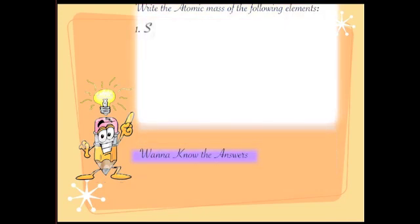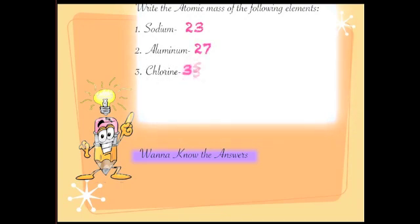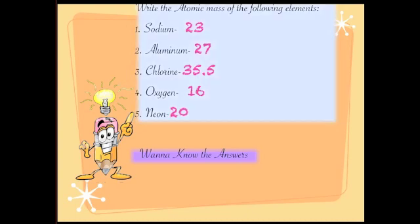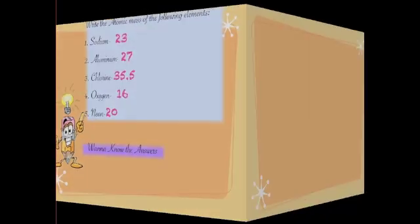The atomic mass of sodium is 23, aluminum is 27, chlorine is 35.5, oxygen is 16, and neon is 20. You can go through the periodic table and try to remember a few of the atomic masses. I hope the concept of atomic mass is now clear for you, and that this session was helpful and informative. Thank you for watching.